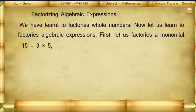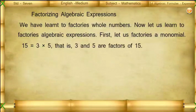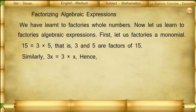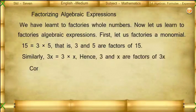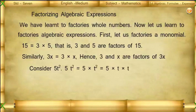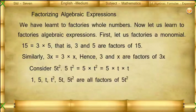15 = 3 × 5, so 3 and 5 are factors of 15. Similarly, 3x = 3 × x, so 3 and x are factors of 3x. Consider 5t²: 5t² = 5 × t² = 5 × t × t. Therefore, 1, 5, t, t², 5t, and 5t² are all factors of 5t².